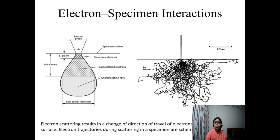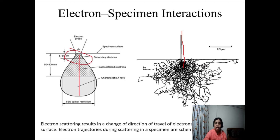Let's come to the electron-specimen interaction. Once the electron is inside the sample, there can be different kinds of interactions — elastic and inelastic. In elastic interaction, electrons scatter from atoms and produce backscattered electrons from the top ~300 nanometers, giving compositional contrast. Secondary electrons come from the top ~50 nanometers — they come from inside the atom, which is why they are used for topographical contrast. There are also other signals like X-rays.